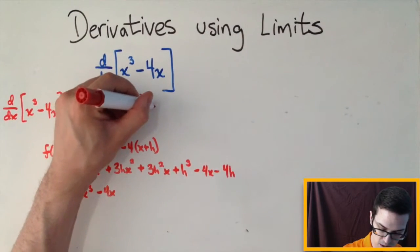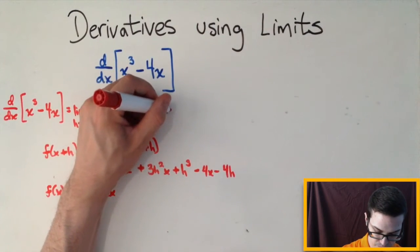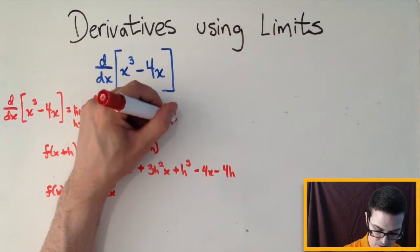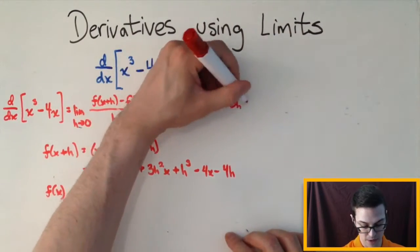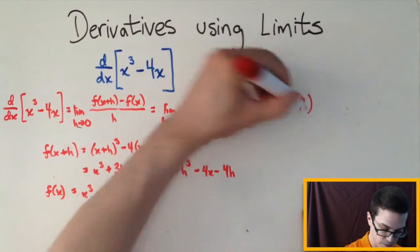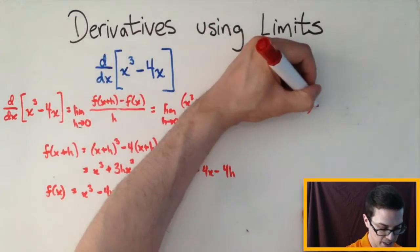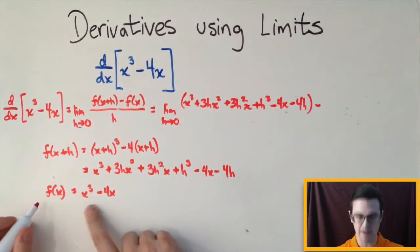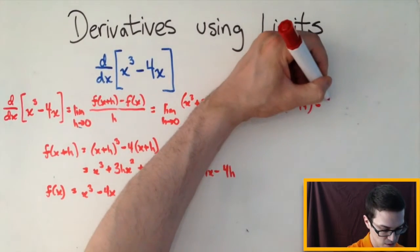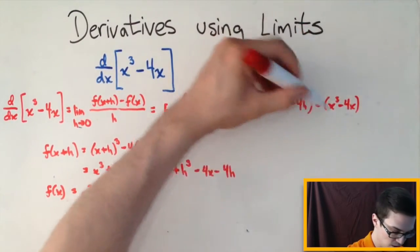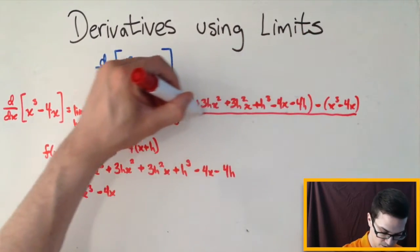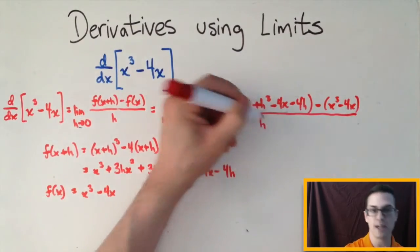So this is going to be equal to the limit as h goes to 0 of this whole thing right here. And I'm going to put a parenthesis around this whole thing minus this f of x right here, which is x cubed minus 4x. So x cubed minus 4x. And I put a line all the way into that. And then it's all divided by h.